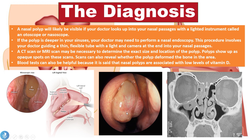The nasal endoscopy can be done when the otoscope can't reach those more difficult places. A CT scan or MRI scan may also be necessary to determine the exact size and location of the polyp. Since polyps can develop within the sinuses as well as the nasal cavity, a CT scan can show the maxillary sinuses and reveal polyp development within them. The polyps show up as opaque spots on these scans, and the scans can also reveal if the polyp has deformed the bone in the area.